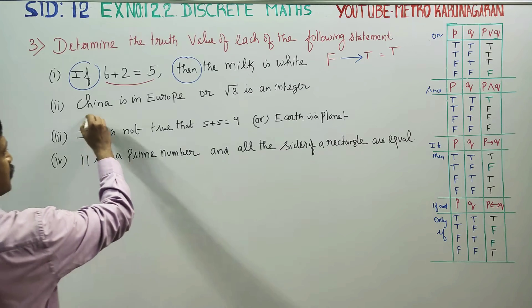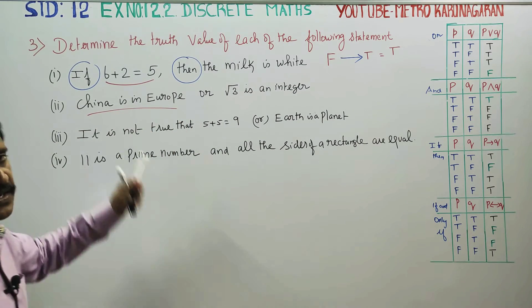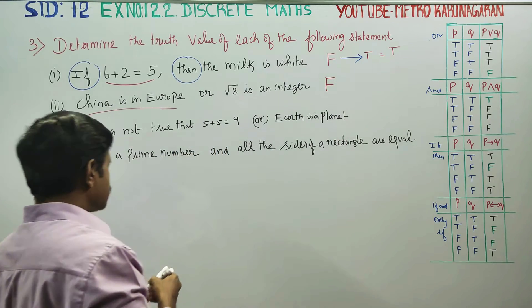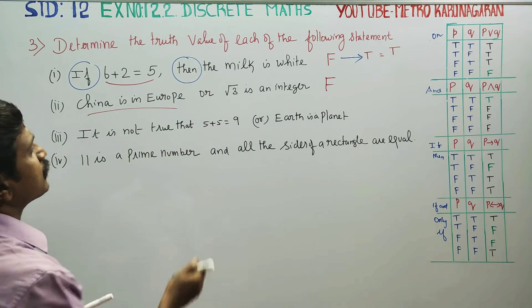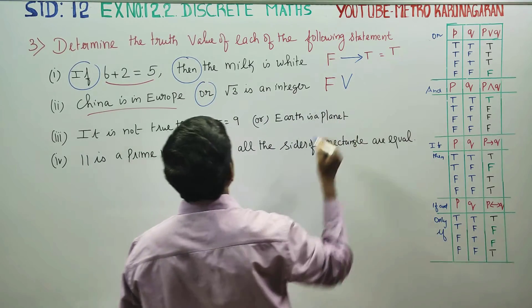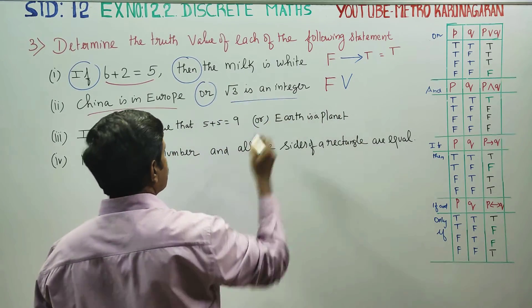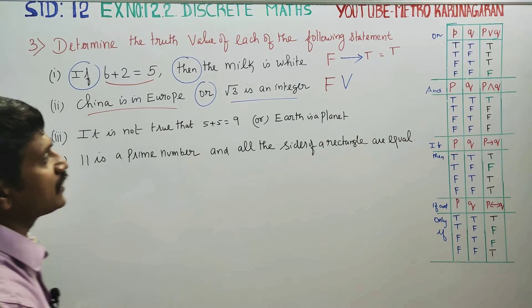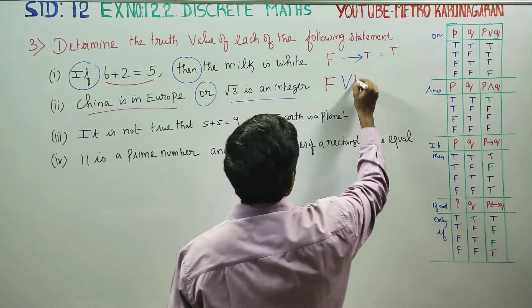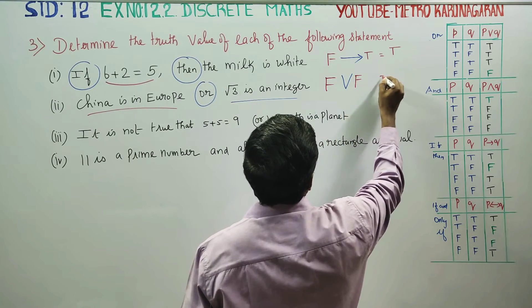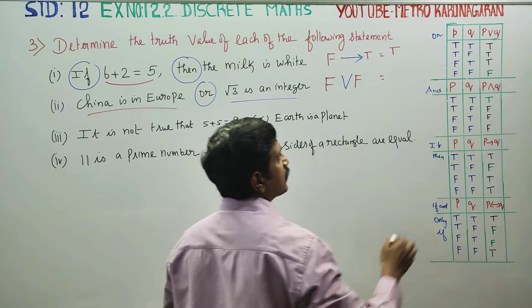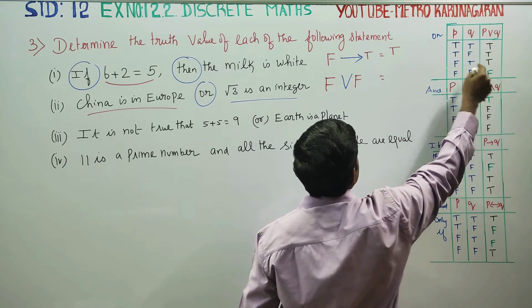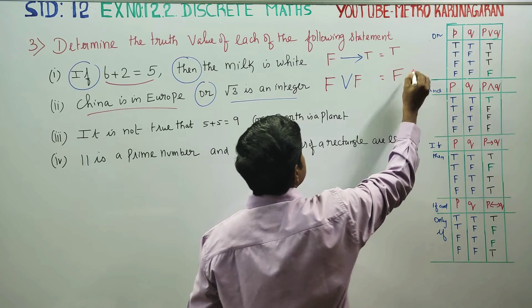Next: China is in Europe — this is false. China is in Asia and China is in Europe uses the AND (∧) connective. We have false and false, so false ∧ false gives the answer as false.